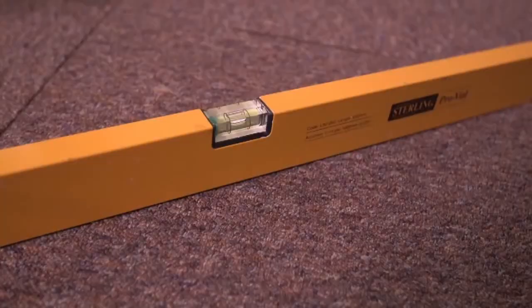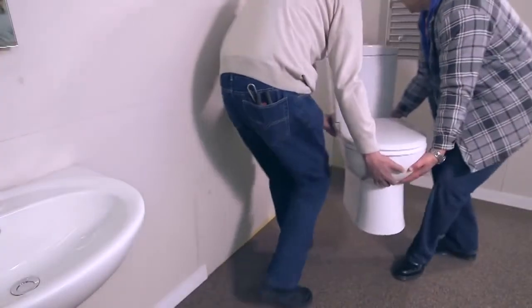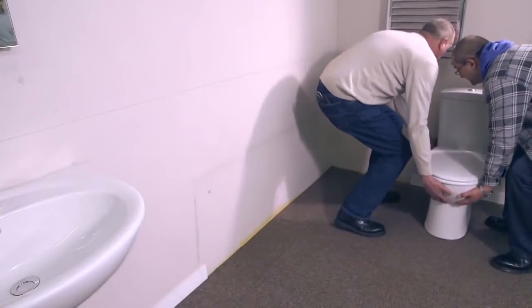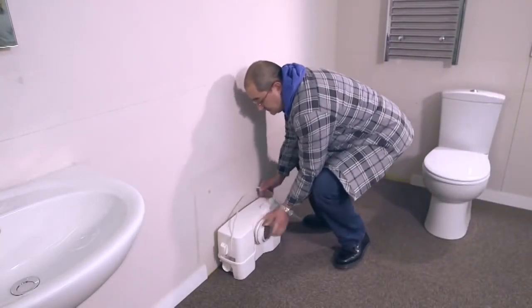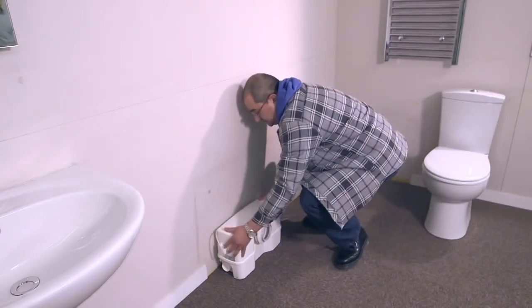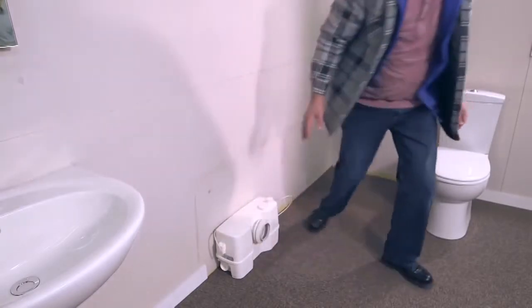Check that the floor is level and even. Decide on the position for the Solo Lift and toilet and allow easy access for post-installation maintenance. Remember, to access the internal parts of the Solo Lift 2, you do not need to remove the toilet pan.